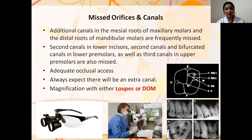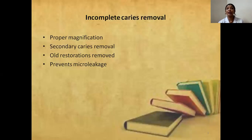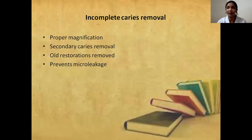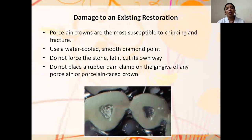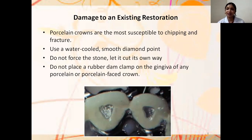Use magnification loupes and a dental operating microscope to help find accessory canals. Proper magnification is required to remove caries — once all old restorations are removed, secondary caries undermining the restoration can be identified, preventing leakage and further damage. Regarding damage to existing restorations: if the adjacent tooth has a porcelain crown, there is a tendency for it to chip if care is not taken. Use a water coolant and smooth diamond point without forcing the stone. Even when placing a rubber dam clamp on porcelain, take care — when making access through a porcelain-fused-to-metal crown or porcelain crown, do it carefully so that the crown can be kept in place after root canal treatment.